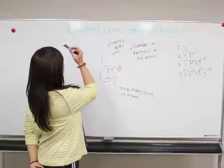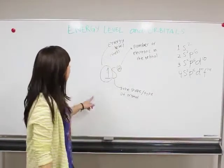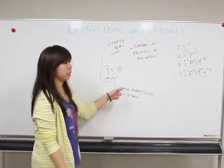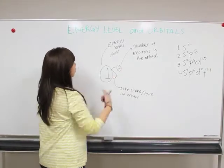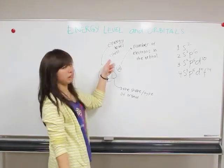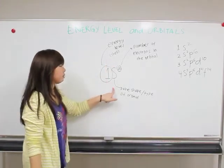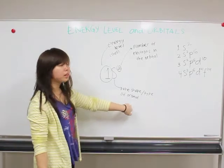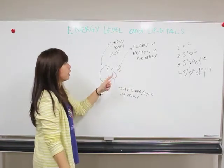Now I'm going to explain about energy level and orbitals. So this is the notation of orbital. In my example, 1s². One means the energy level or the shell. S means the shape or type of orbital. And two means the number of electrons in the orbital.